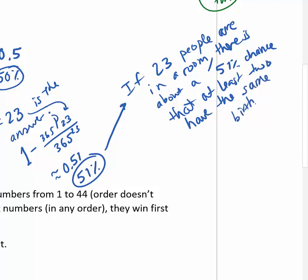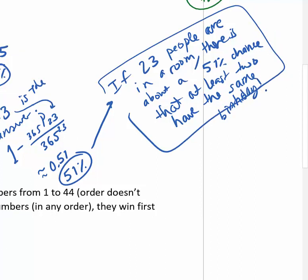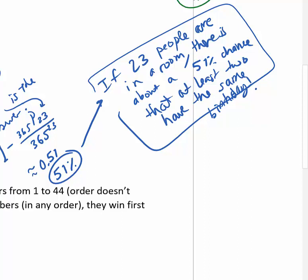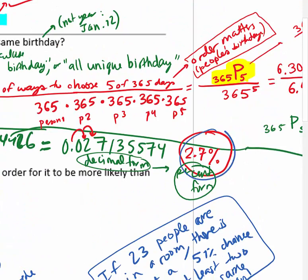With more people - 24, 25, 100, 200 - the chance goes up and up. Below 23 it drops down to 40-something percent, 30-something percent, all the way down to 2.7% for 5 people as we calculated. Math can be very counterintuitive, but I think that's pretty interesting.